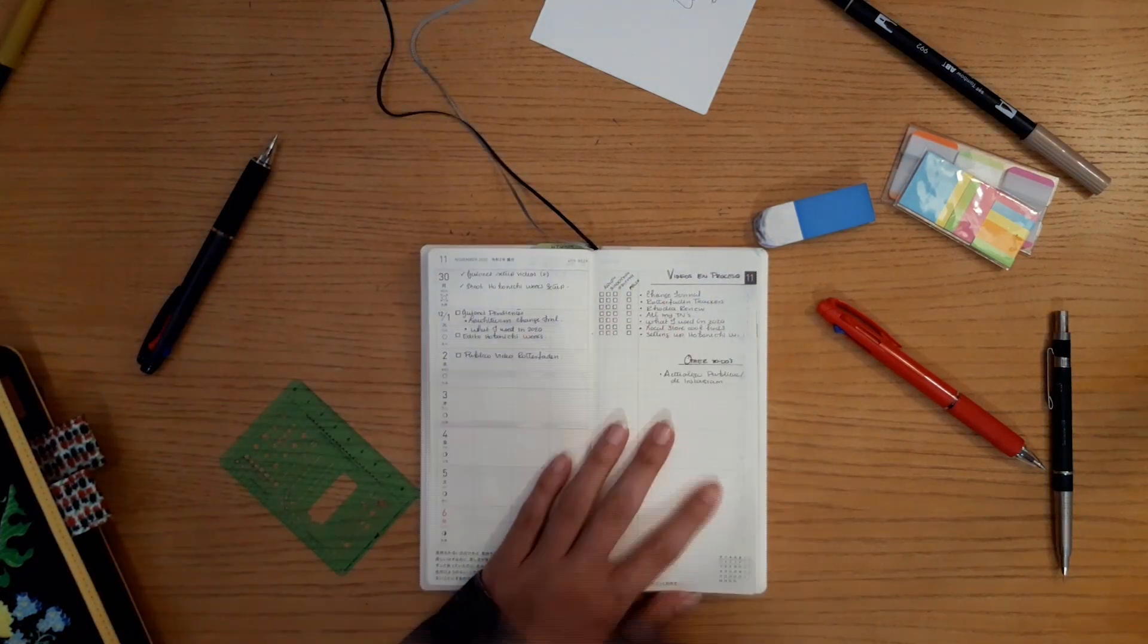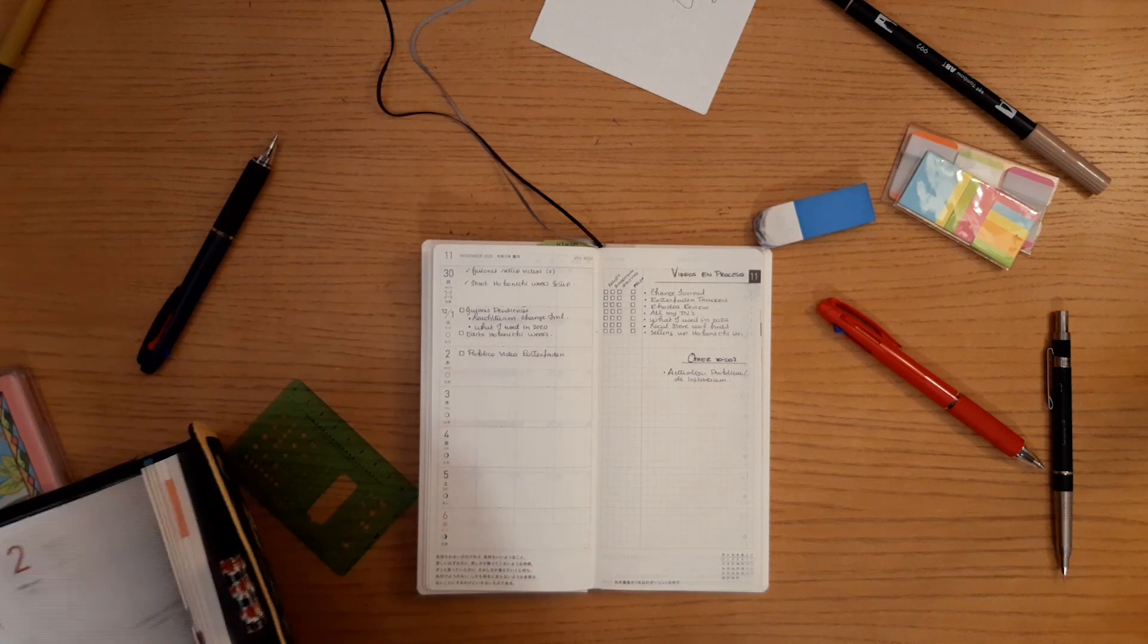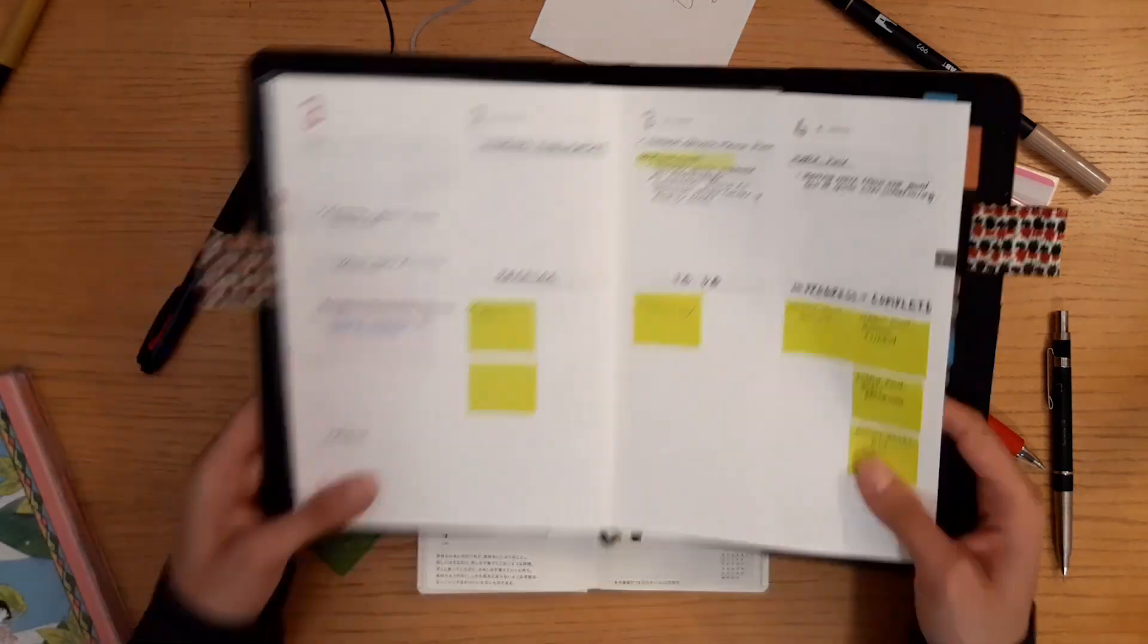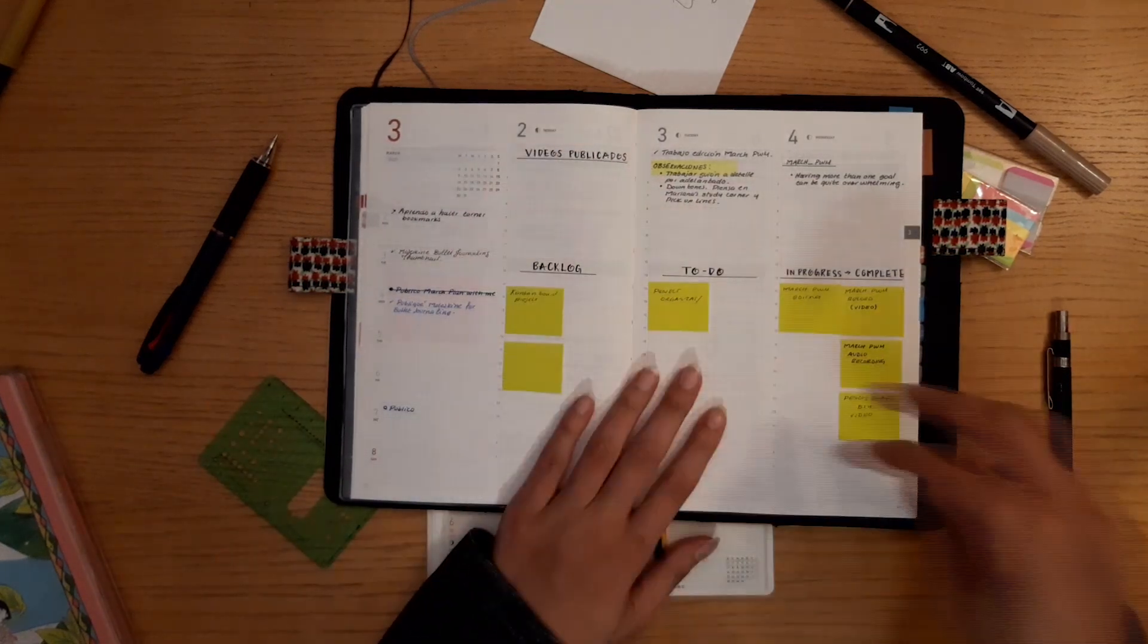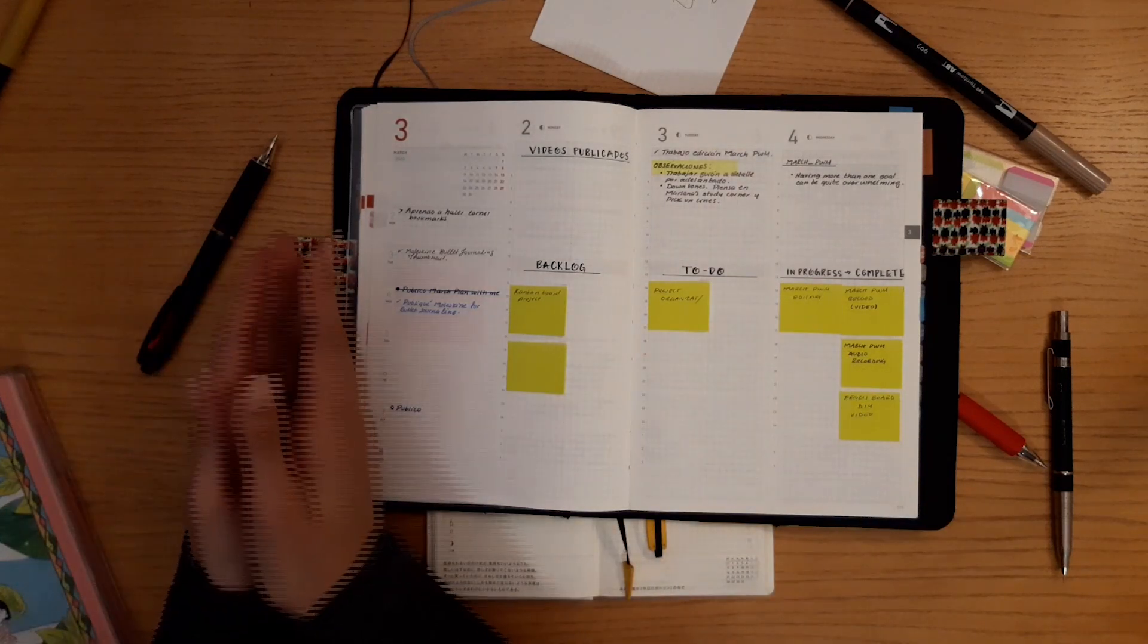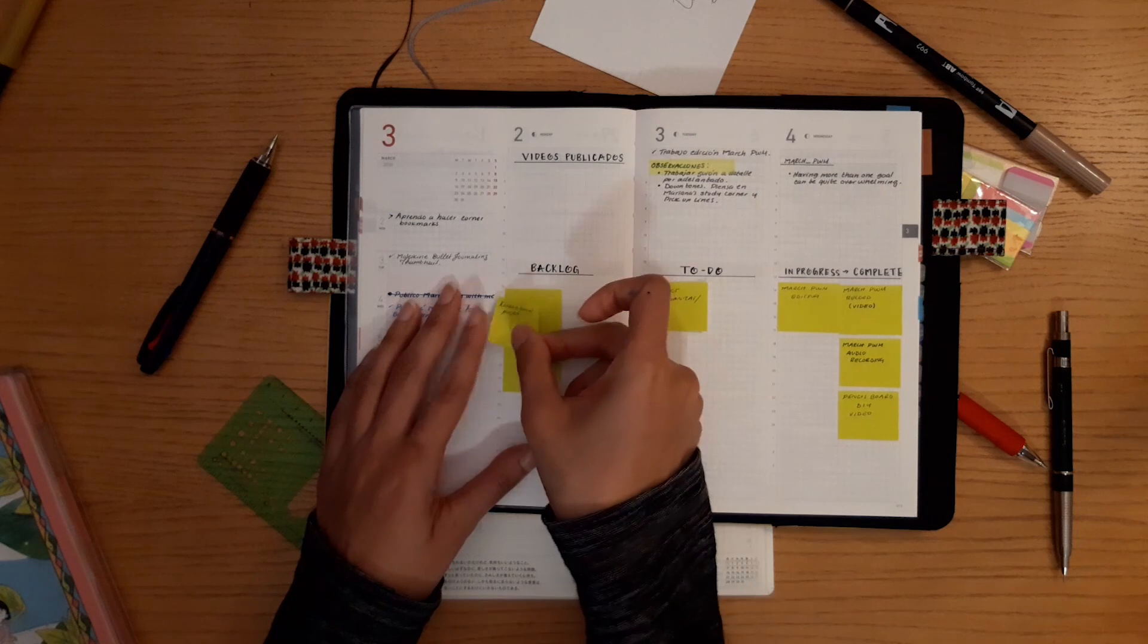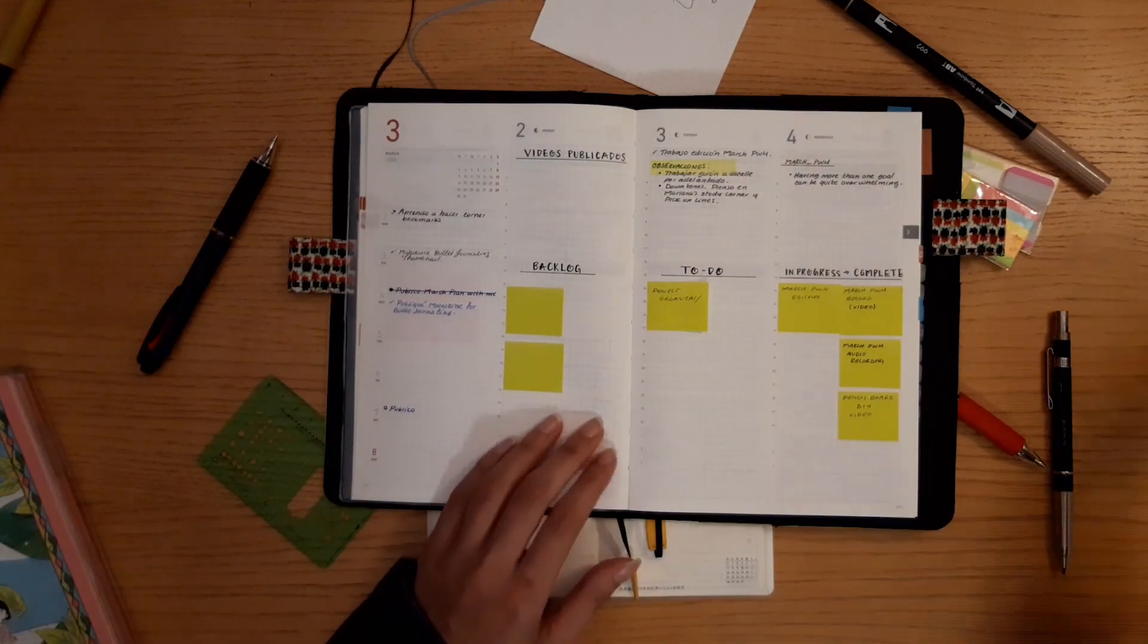This is kind of like a very minimalist Kanban board. I don't know if you're familiar with that planning - it's an efficiency tool. Basically a Kanban board shows you where you are at in the planning process. For example, if I have to do one video, I can see backlog, to do, in progress, or complete. Basically you start moving - this is a task - you move it from one place to the other and you can see very easily where you're at and you're just getting rid of tasks.